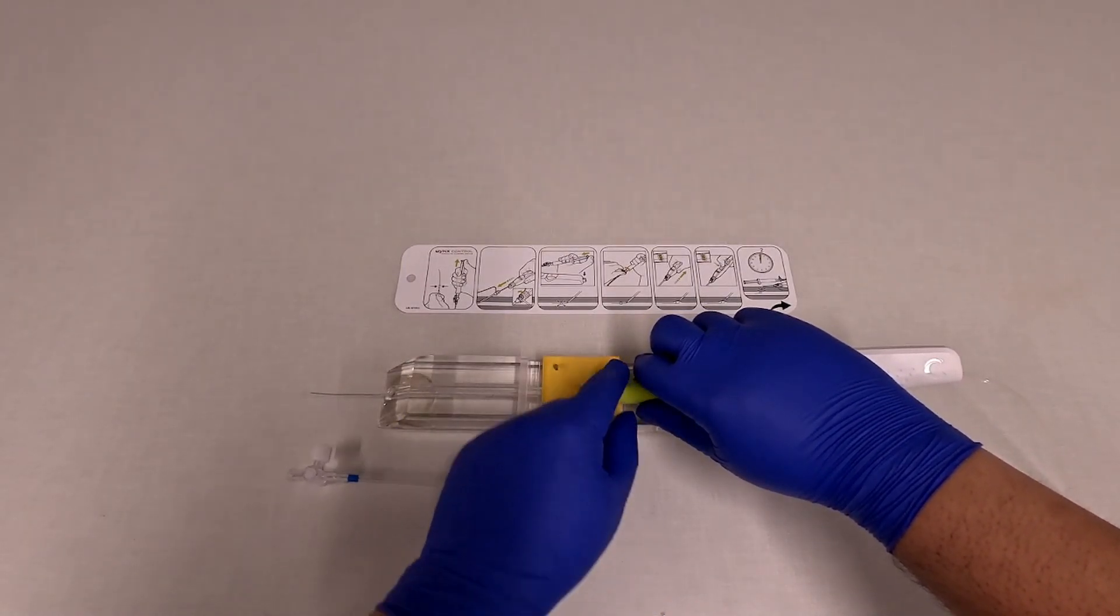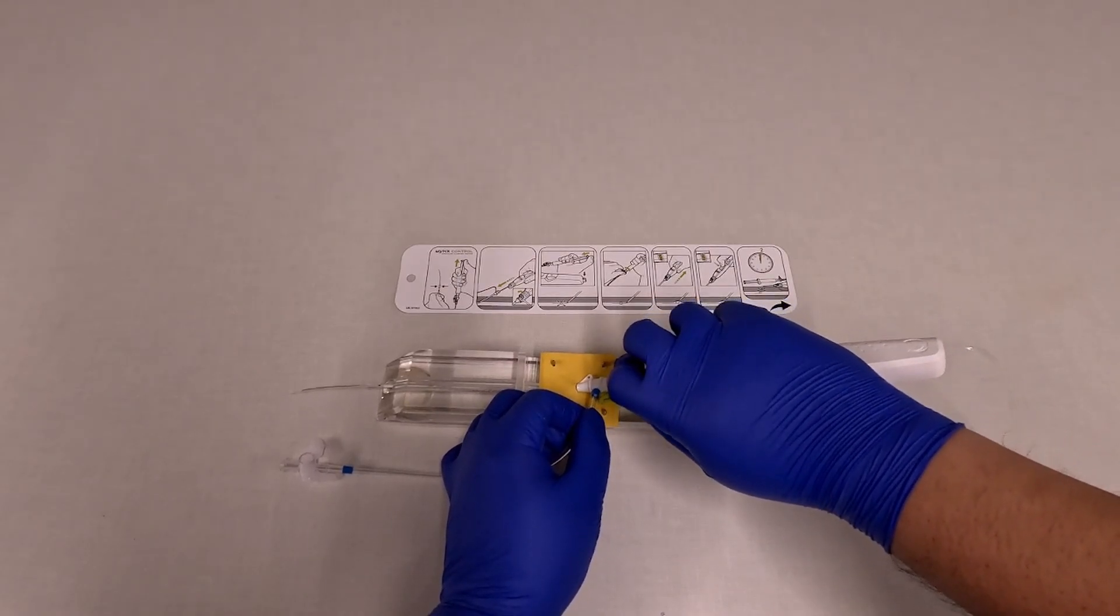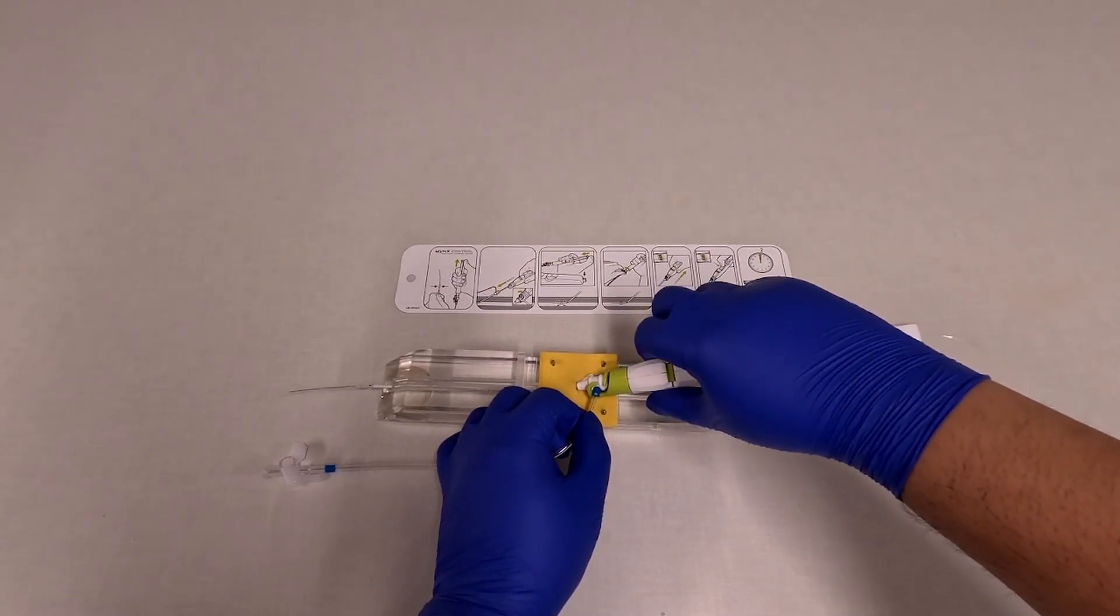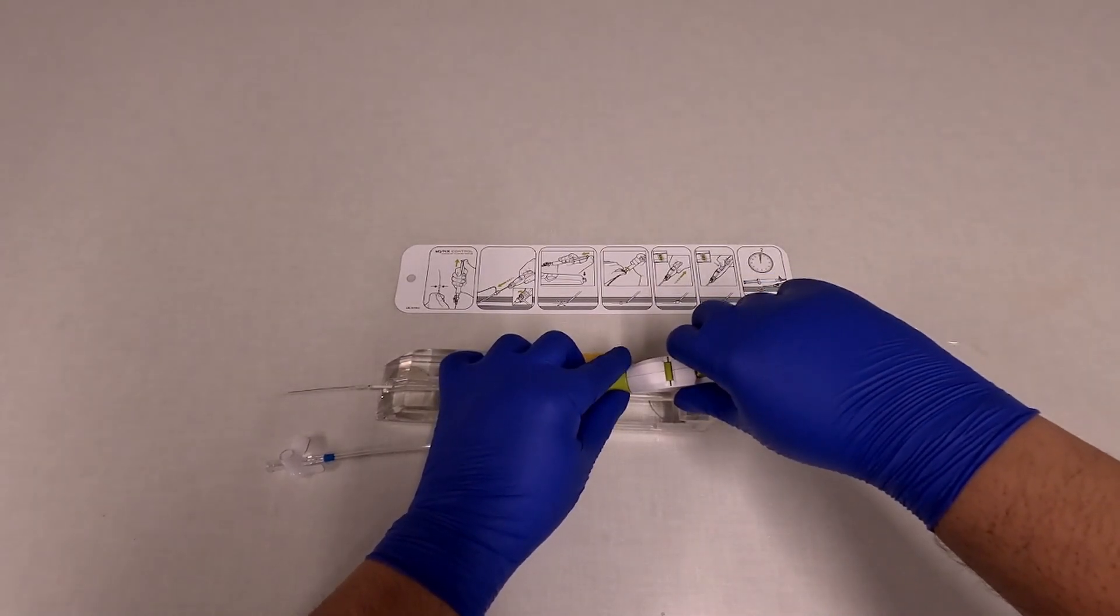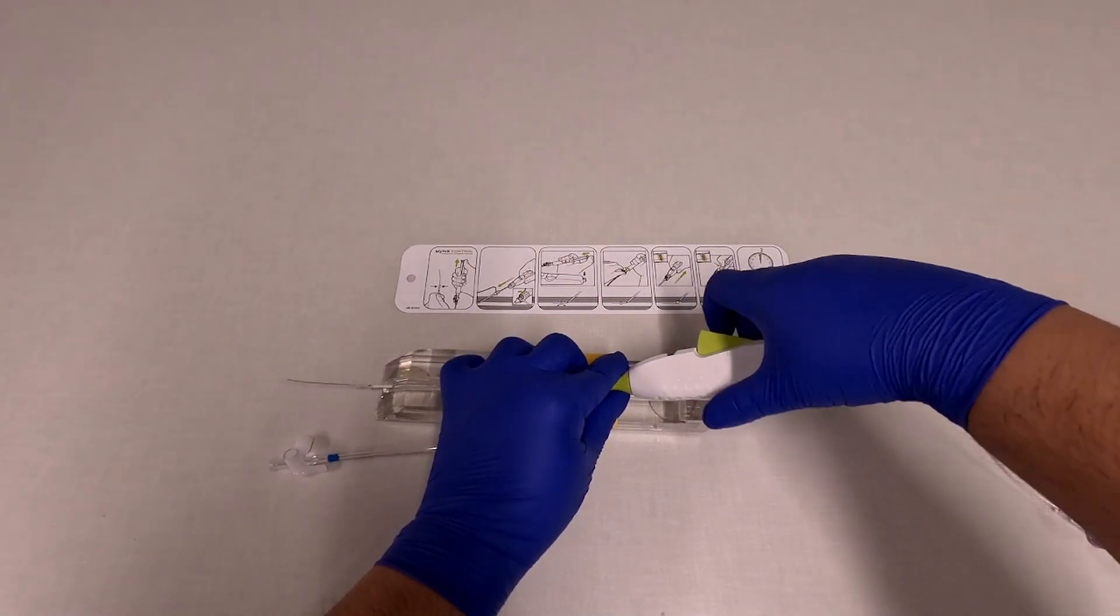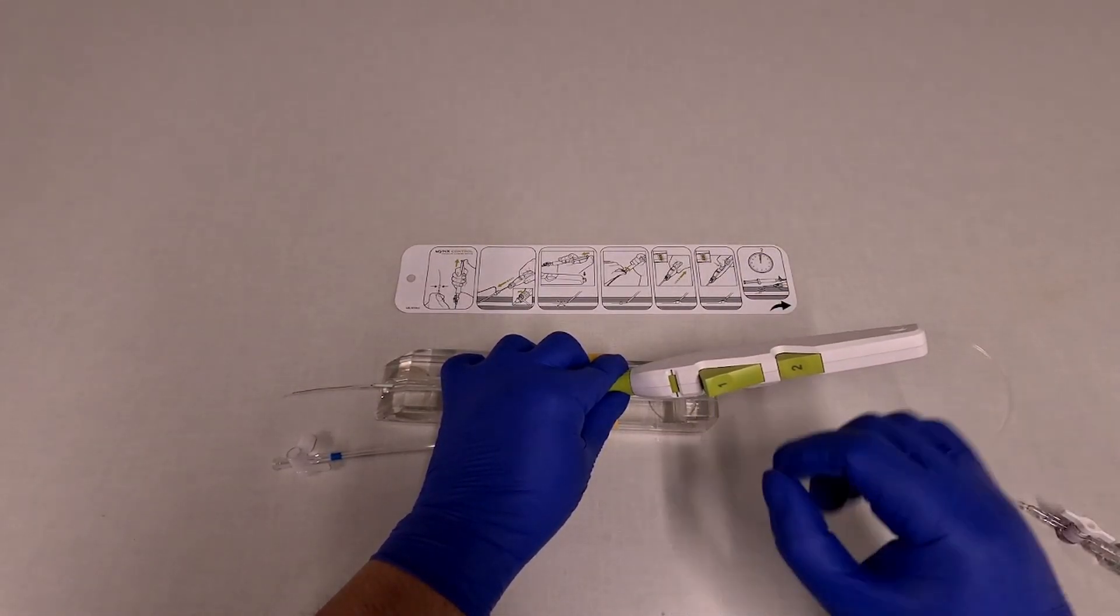You can see at this green part on Minx Control, it actually has a hook that's designed to catch onto the sheath sidearm. So you rotate that around and it locks onto the sheath. Then you can rotate the white handle so that the buttons face toward you.